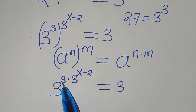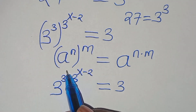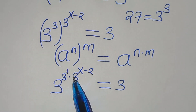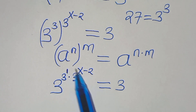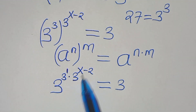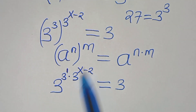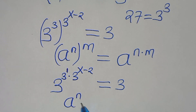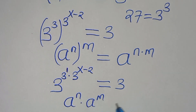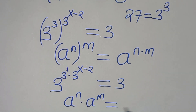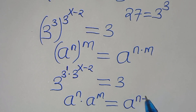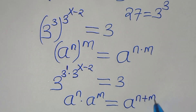Now, 3 on the right side is 3 raised to the power of 1. On the left, 3 to the power of 1 times 3 to the power of x minus 2 is in the form of a to the power of n times a to the power of m, which we can express as a to the power of n plus m.